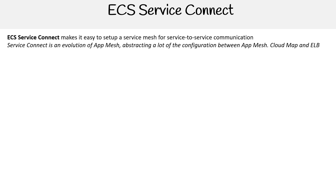ECS Service Connect makes it easy to set up a service mesh for service-to-service communication. Service Connect is an evolution of AWS App Mesh, abstracting a lot of the configuration between App Mesh, Cloud Map, and Elastic Load Balancer.